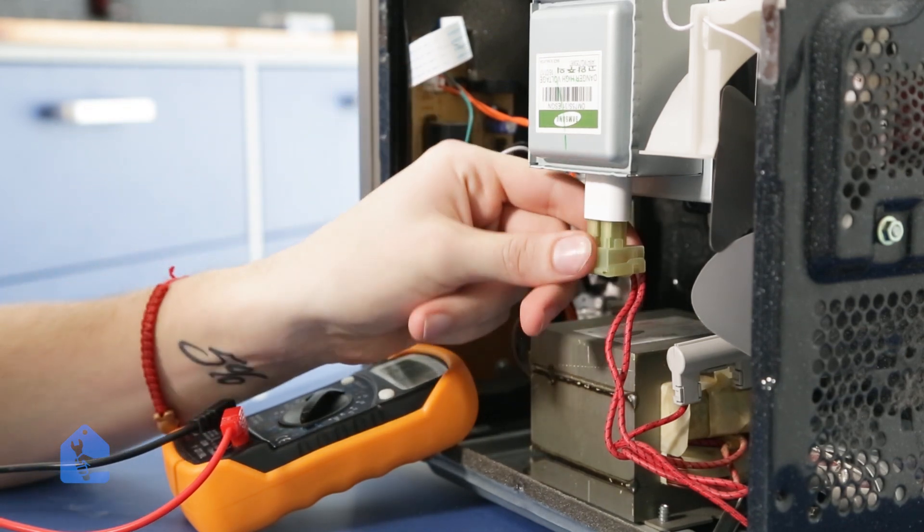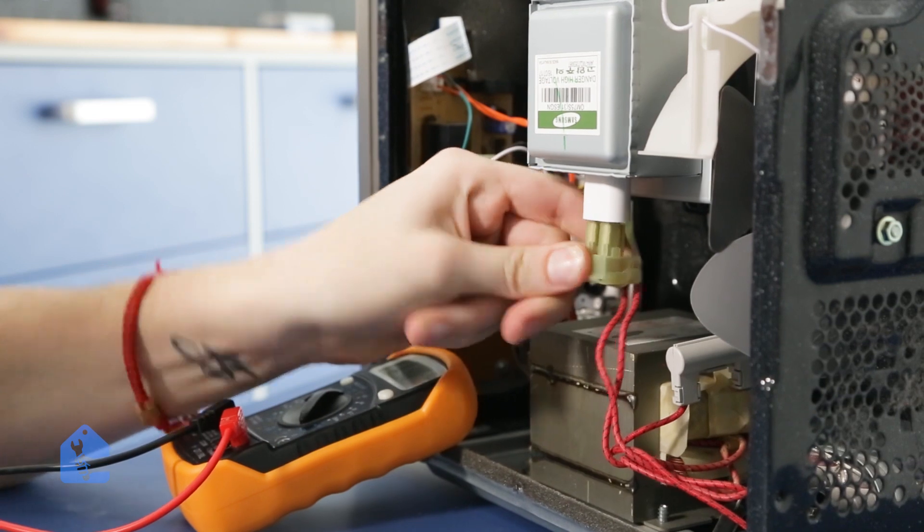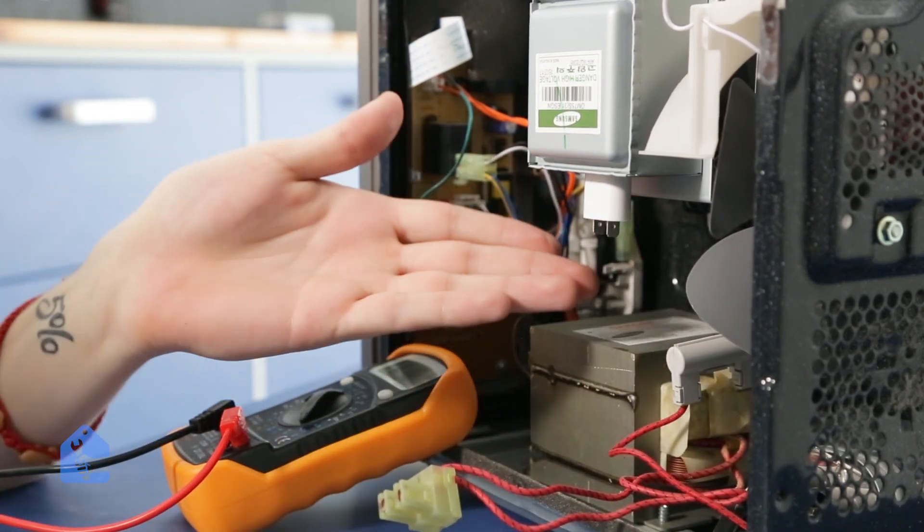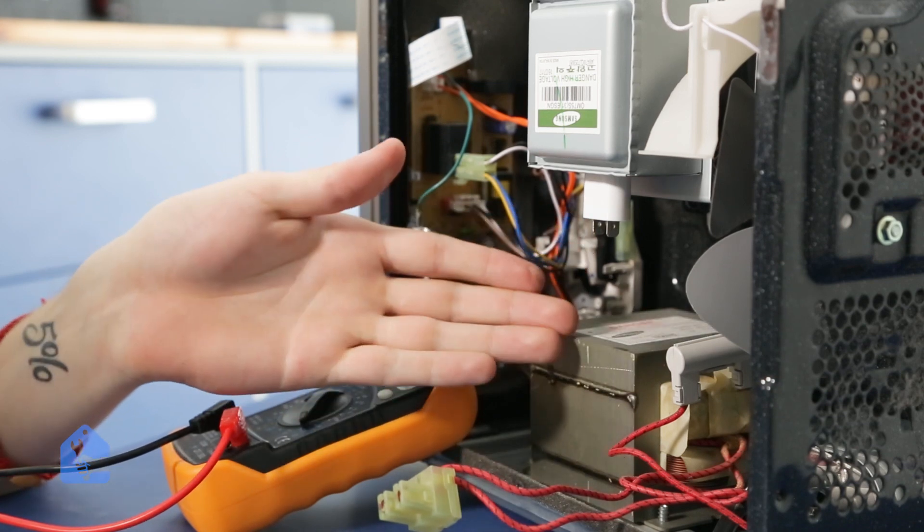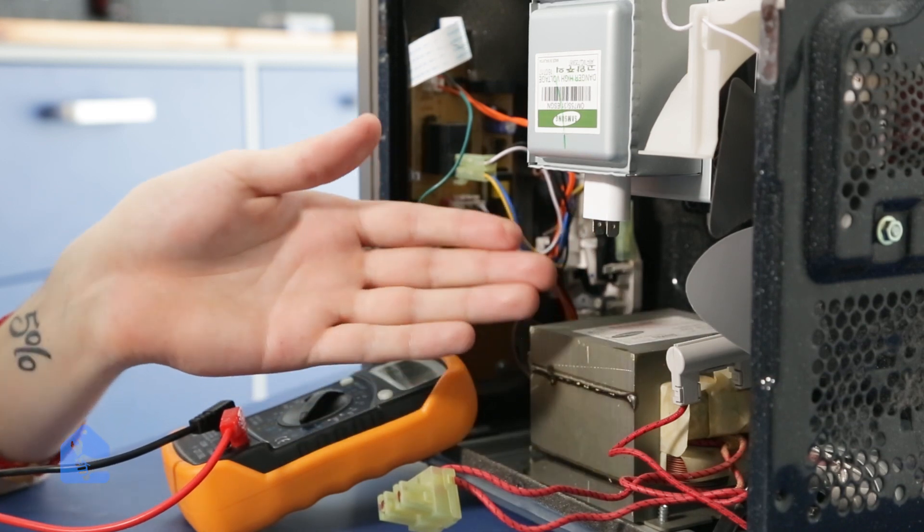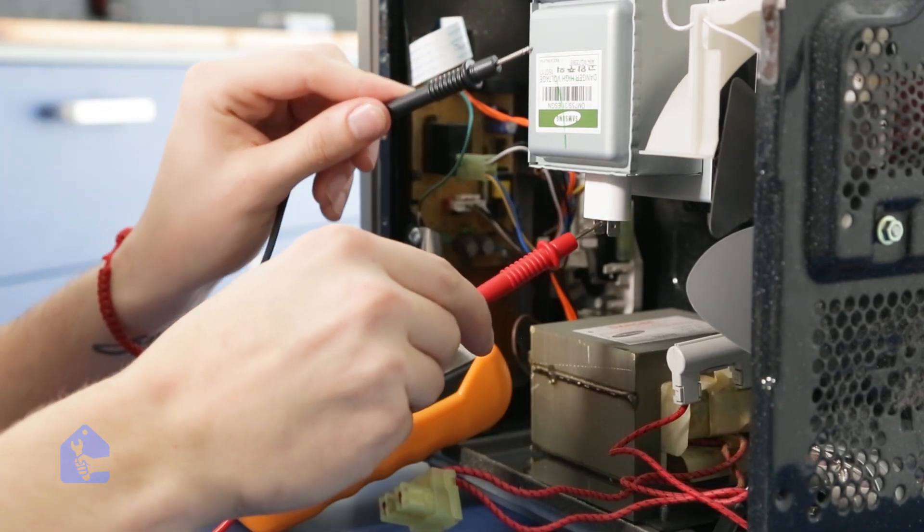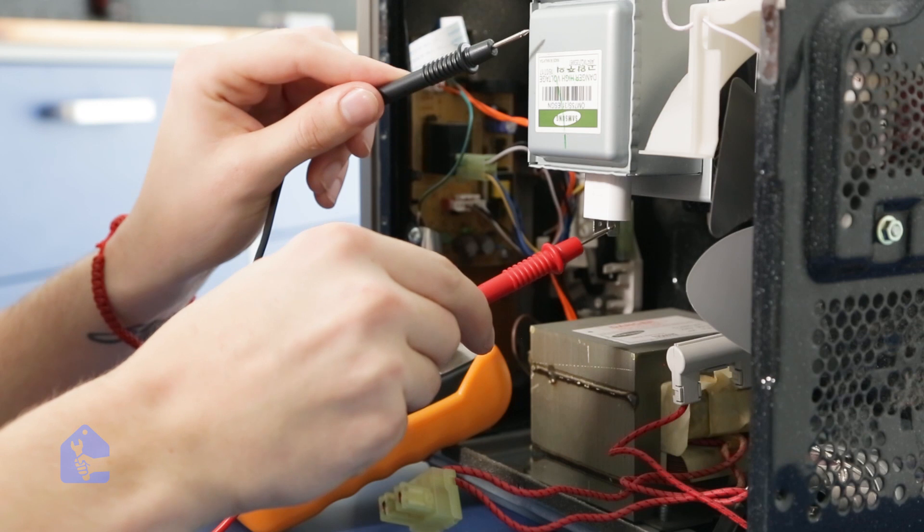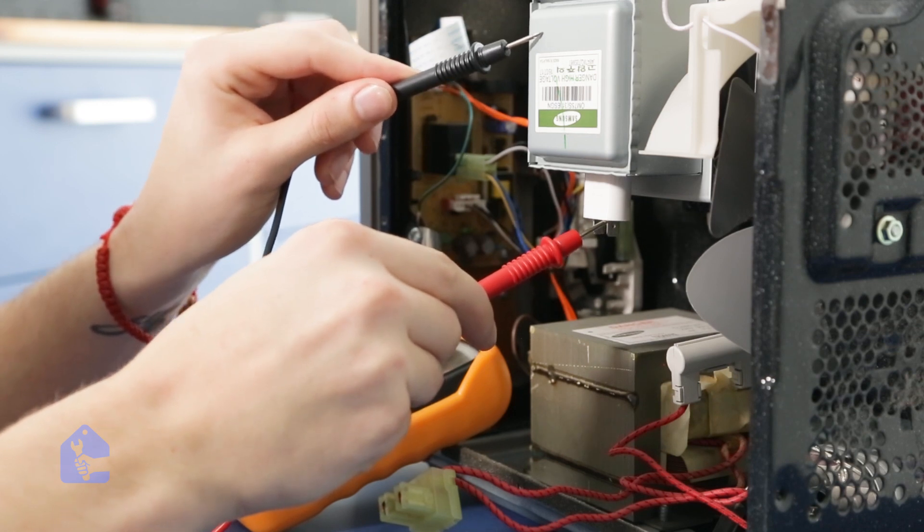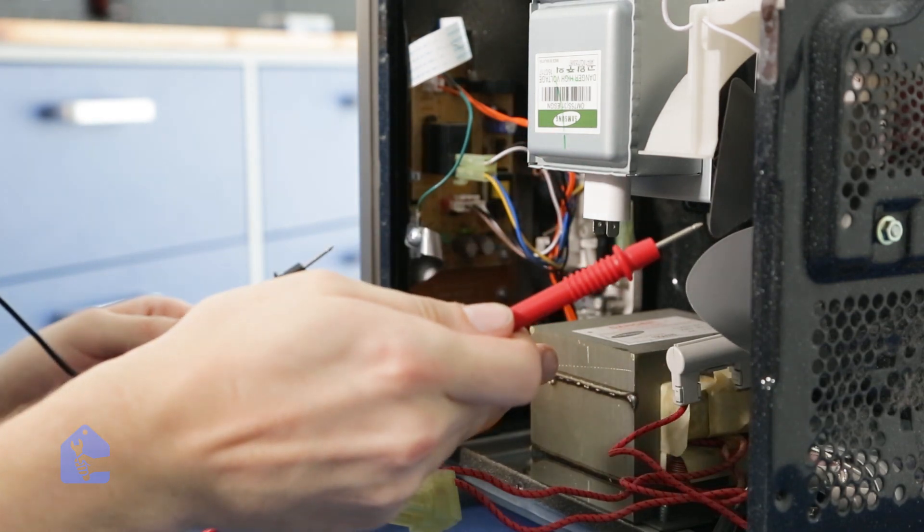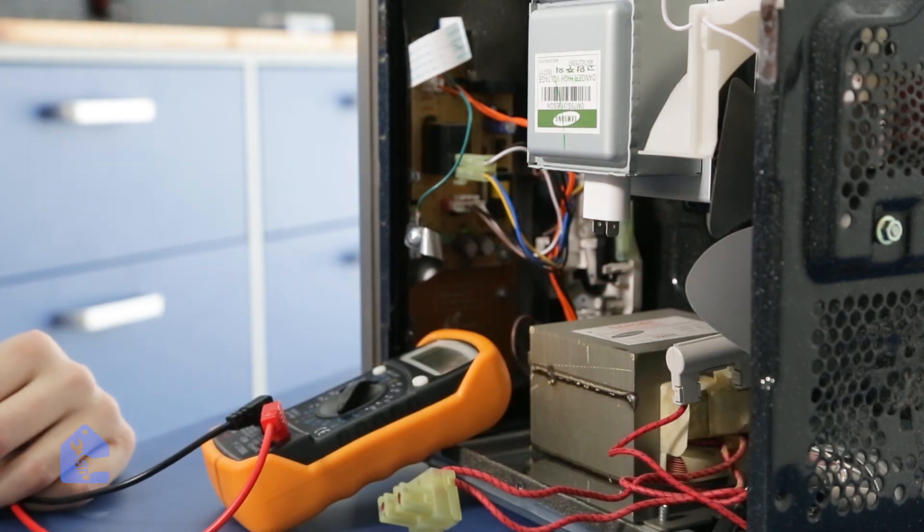Go ahead and disconnect the connector so we can test it, and then set your multimeter to 200,000 ohm resistance reading and test each terminal of the magnetron for its ohm resistance. If it shows a number, it means it's broken. So this pin is testing fine and this pin is showing us a reading, so what that means is that the magnetron is shorting out inside and there's definitely an issue with it.